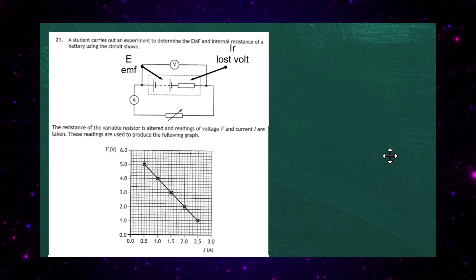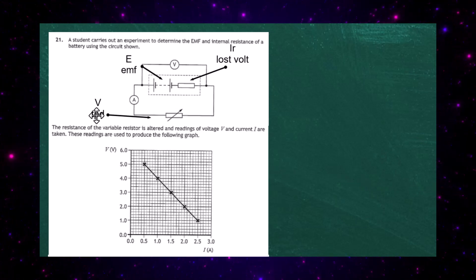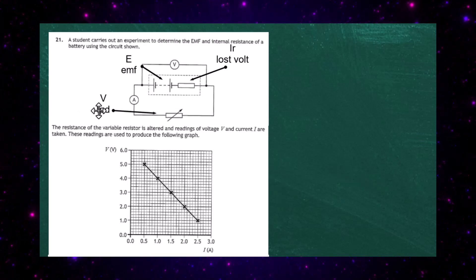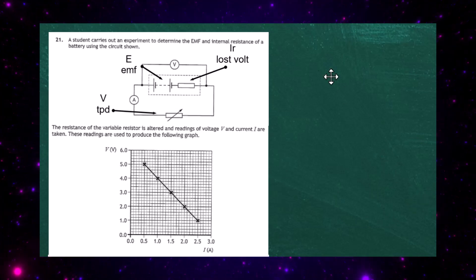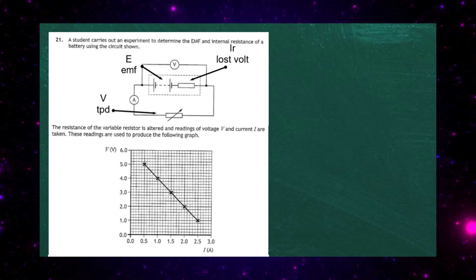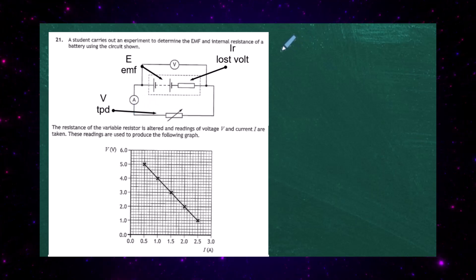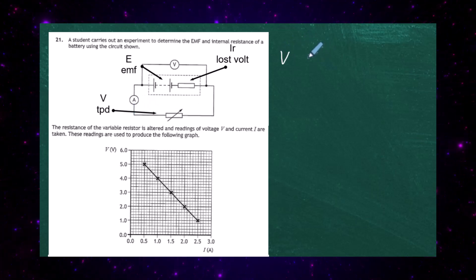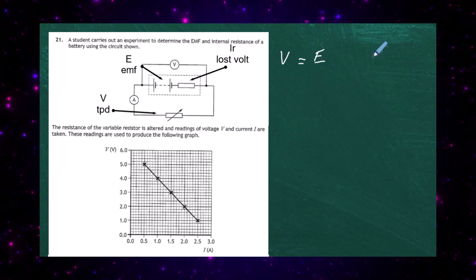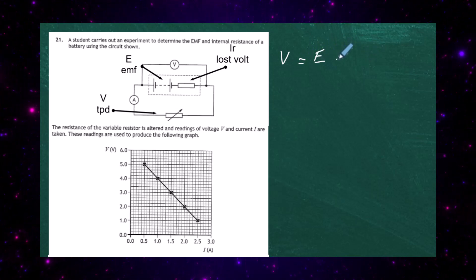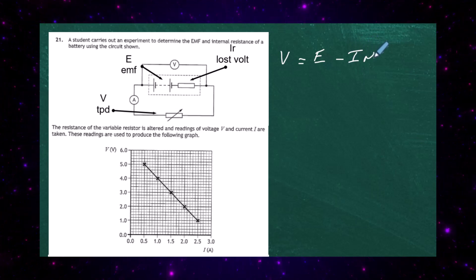What we have available at the terminals is the terminal potential difference V. Doing a bit of accountancy: the terminal potential difference V equals what you started with — the EMF E — minus what you lost, which is the lost volts I times R. So V equals E minus IR.